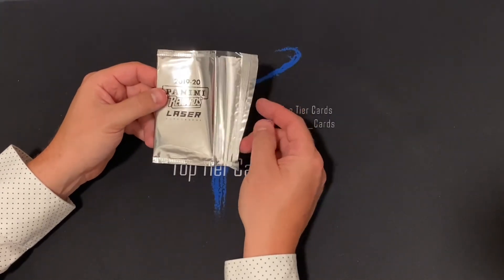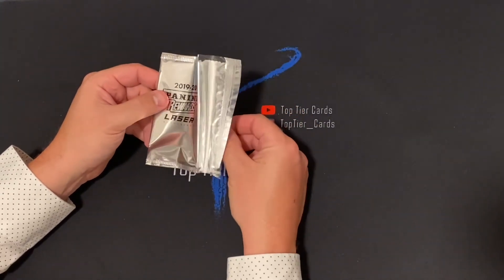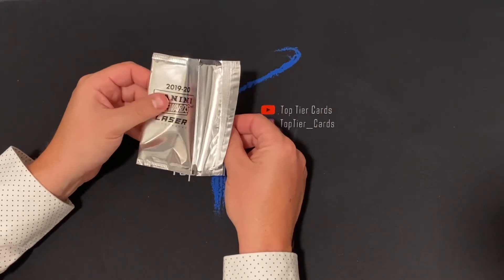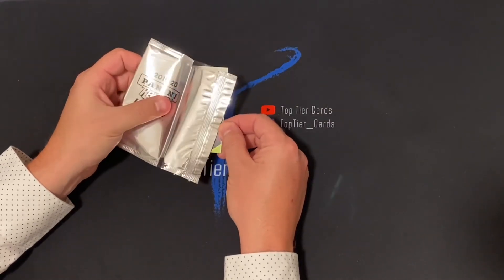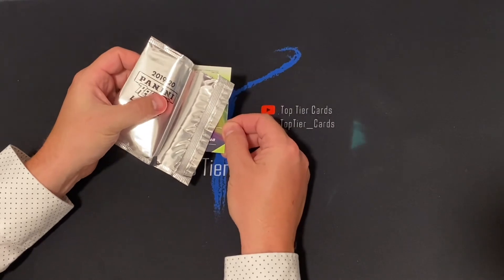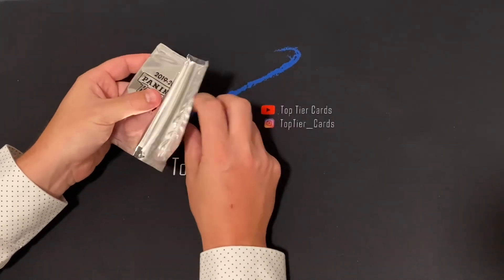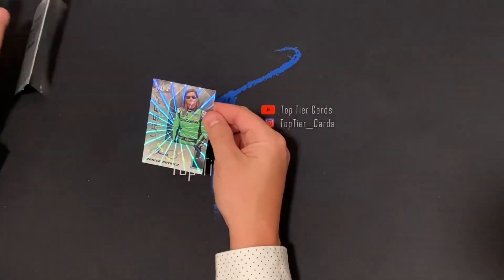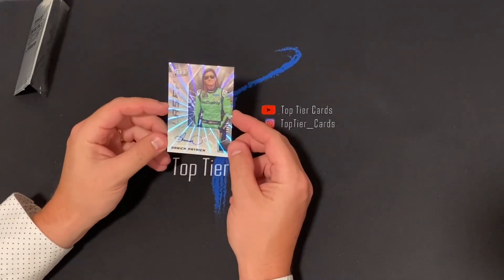Everything else probably 2021, once you get LaMelo Ball and stuff like that. So let's see what I snagged. I don't see, oh it's backwards, and I got a Danica Patrick numbered of 15.